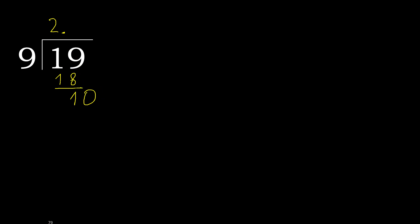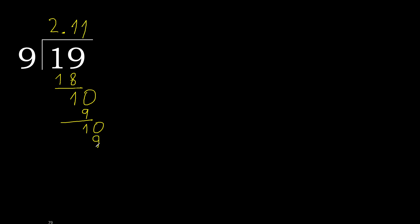9 multiplied by 2 is greater. 9 multiplied by 1 is 9. Subtract. Complete. Point is here. 10. 9 multiplied by 1 is 9. Subtract. Complete.